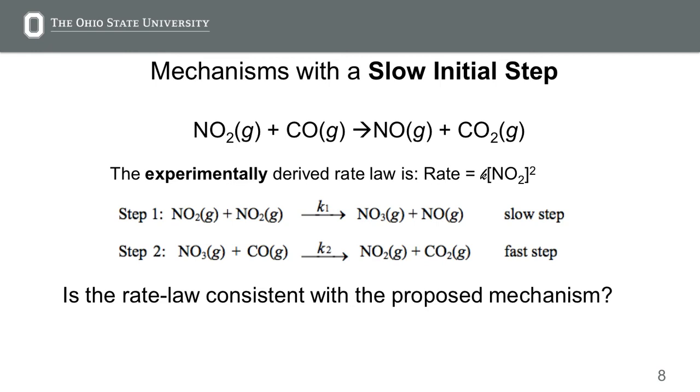For mechanisms with a slow initial step, the rate law is predicted from the slow step. A mechanism is going to be a set of reactions, two or three reactions listed very much like this: step 1, step 2, step 3. For mechanisms with the slow initial step, the rate law is predicted from the slow step.